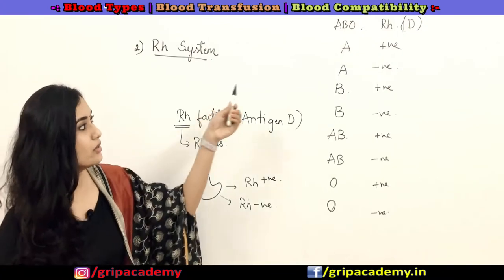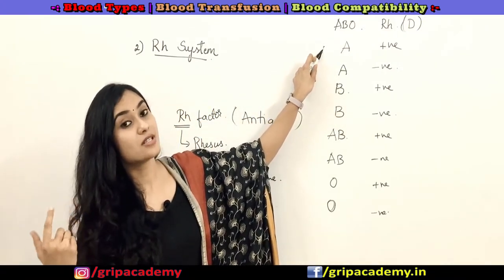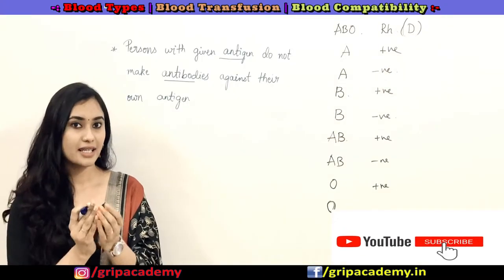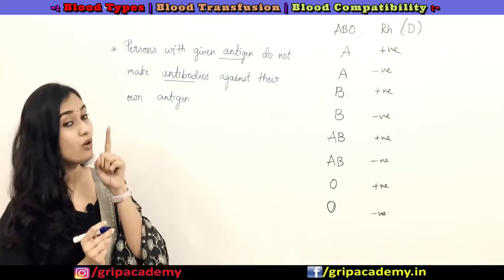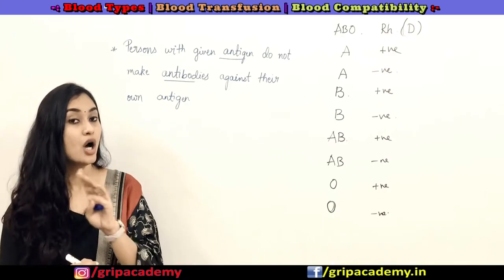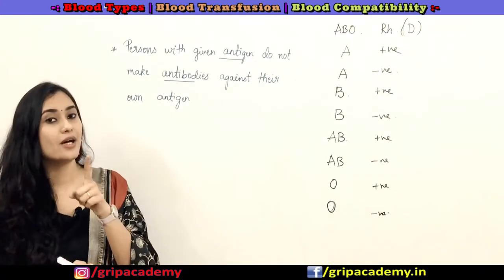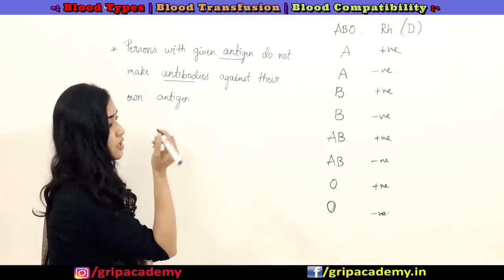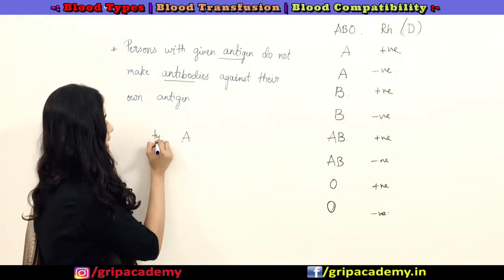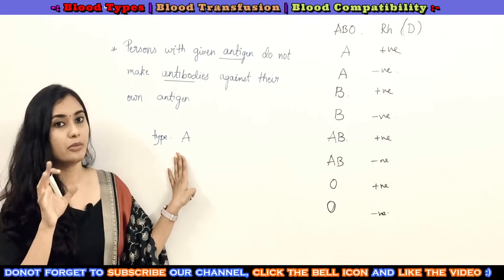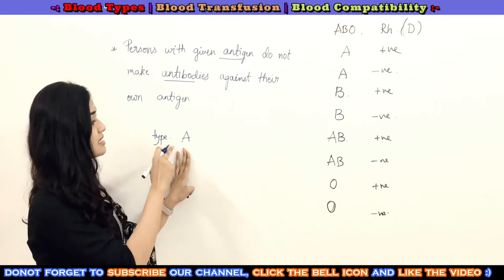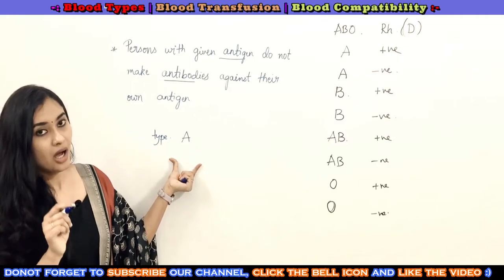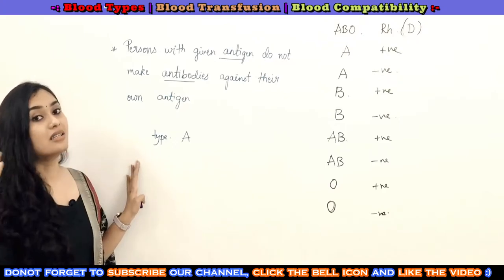Now let's understand the importance of positive or negative by considering two scenarios — why it is necessary to transfuse A positive blood to an A positive person only, and not to an A negative person. First, remember this basic principle: a person with a given antigen will not produce antibodies against their own antigen. For example, a person with type A blood group will not produce antibodies against their own antigen A.